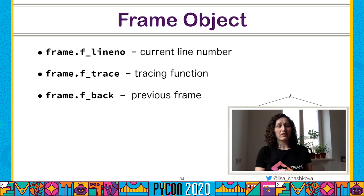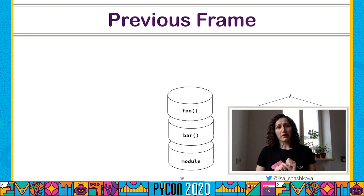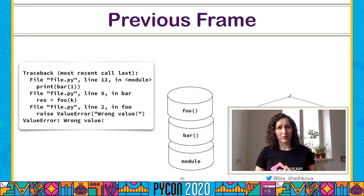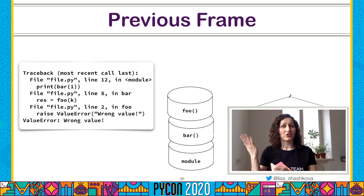Returning to the frame object: in addition to variables and the code object, a frame also stores the current line number being executed, a tracing function which helps to trace events in the current frame, and a link to the previous frame. Since frames are stored in a stack-like data structure, the easiest way to inspect the current frame state is to iterate over them using the link to the previous frame. This is exactly how exception traceback works — when an exception is raised and not handled, Python prints a traceback so you can understand how you reached that place in the program.